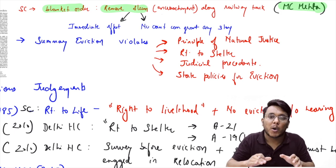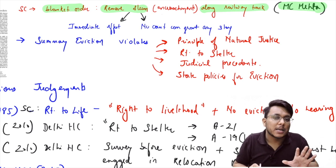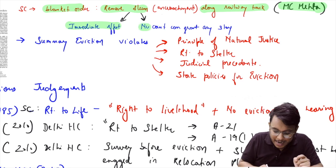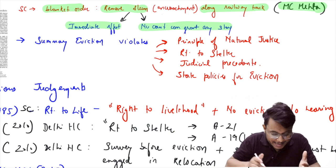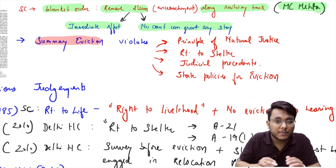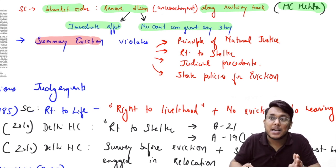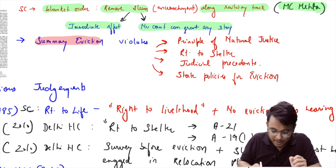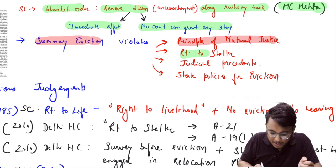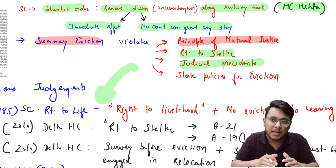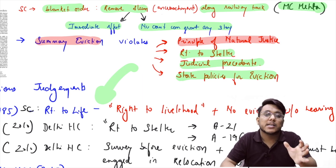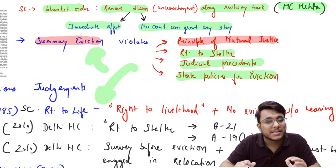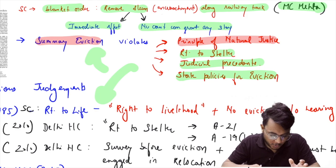This is an example of summary eviction — removing a person without any scope for appeal. This goes against: the principle of natural justice; the right to shelter under Article 21; existing judicial precedents; and the government's own eviction policy. Let's see the relevant judgments. First, Olga Tellis (1985): the Supreme Court recognized that under the right to life, there is a right to livelihood and a right that there should be no eviction without a hearing — which is being violated here.